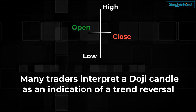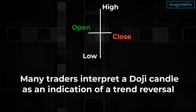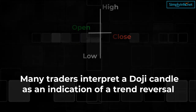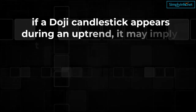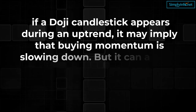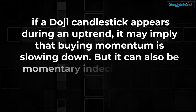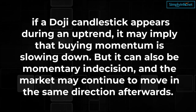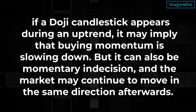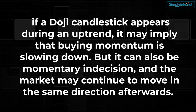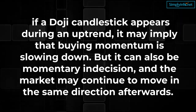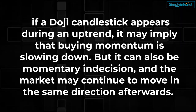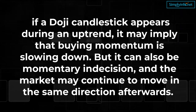Many traders interpret a doji candle as an indication of a trend reversal, so they choose to pause and reflect for a more convincing pattern to appear. For example, if a doji candlestick appears during an uptrend, it may imply that buying momentum is slowing down, but it can also be momentary indecision and the market may continue to move in the same direction afterwards. So one must not plan their strategy based only on a single doji pattern — it may be wrong.